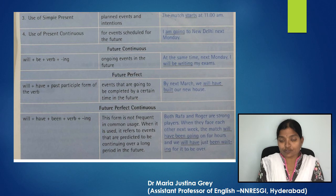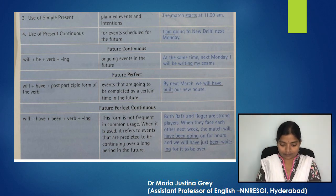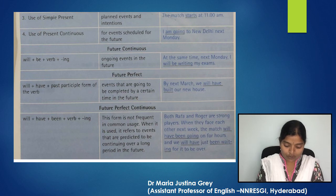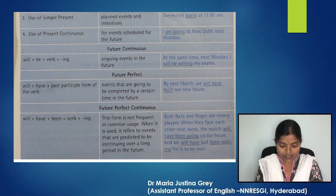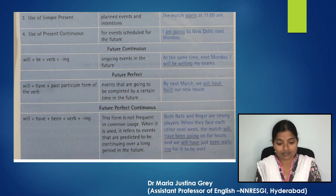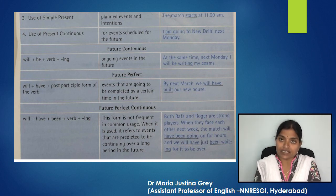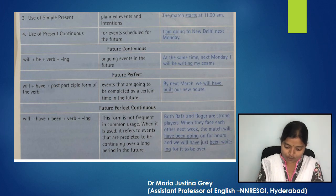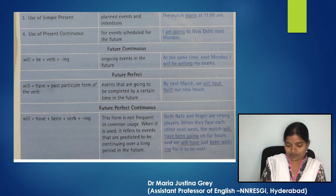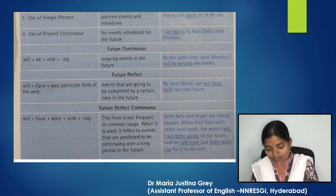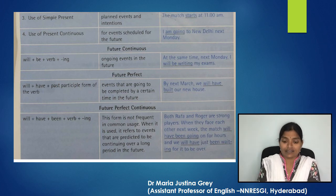Let's move on to future continuous. For this we need 'will' plus 'be' plus verb plus '-ing.' It is used to talk about ongoing events in the future. For example, 'At the same time next Monday, I will be writing my exams.'